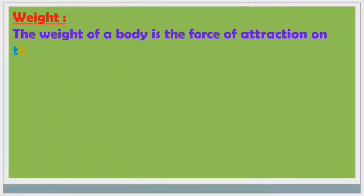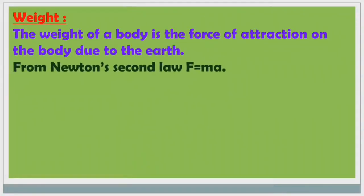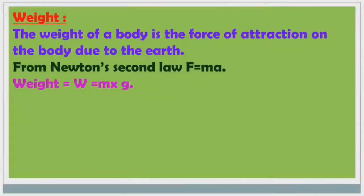Now we will discuss about weight. The weight of a body is the force of attraction on the body due to the earth. From Newton's second law, we know F equals MA. For weight, W equals M times G, where G is the acceleration due to gravity substituted in place of A.